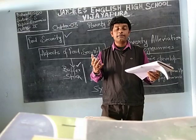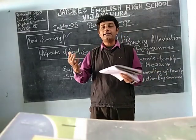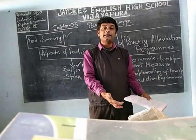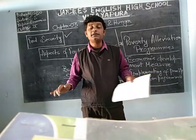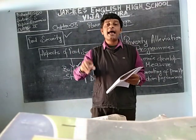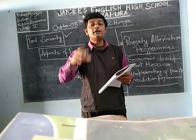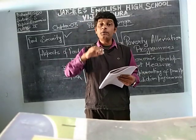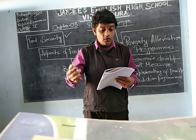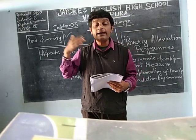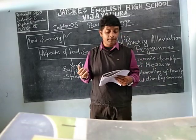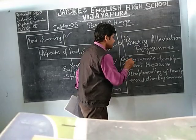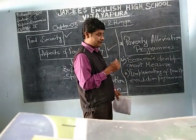Income should be more, and there must be equal distribution of that income among the people. It should not happen that somebody is getting one lakh and somebody is getting one thousand — that is not equal distribution of income. So with the five-year plan they focus on income development and equal distribution among all the people of the country. With this, we have completed the economic development measure.